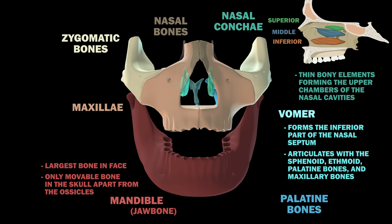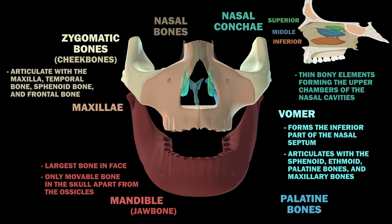The zygomatic bones, or your cheekbones, articulate with the maxilla, temporal bone, sphenoid bone, and frontal bone. The lacrimal bone is a small bone in the front of the medial wall of the orbit.